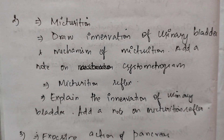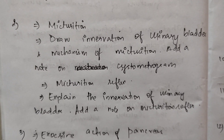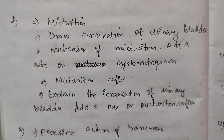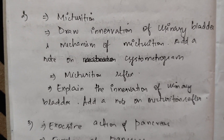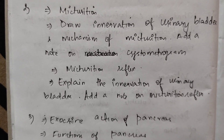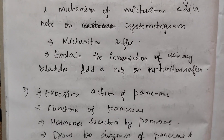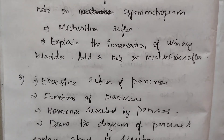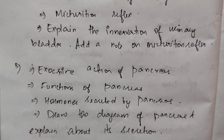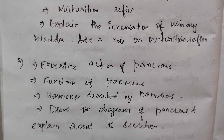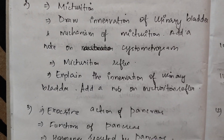Second important 5-mark topic: micturition — draw the innervation of the urinary bladder and explain the mechanism of micturition. Add a note on cystometrogram. Also: explain innervation of the urinary bladder and add a note on micturition reflex.